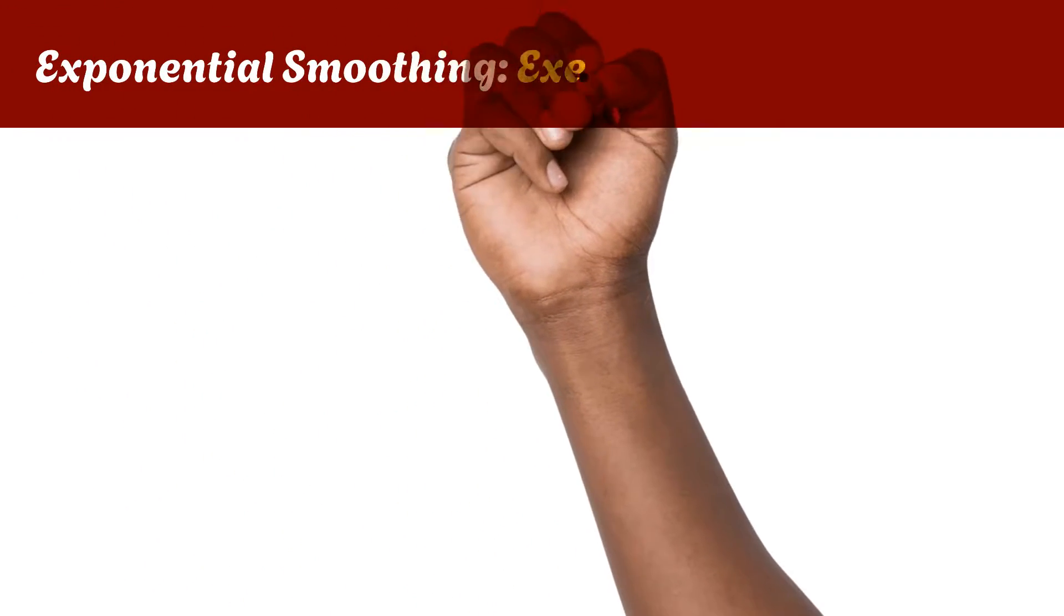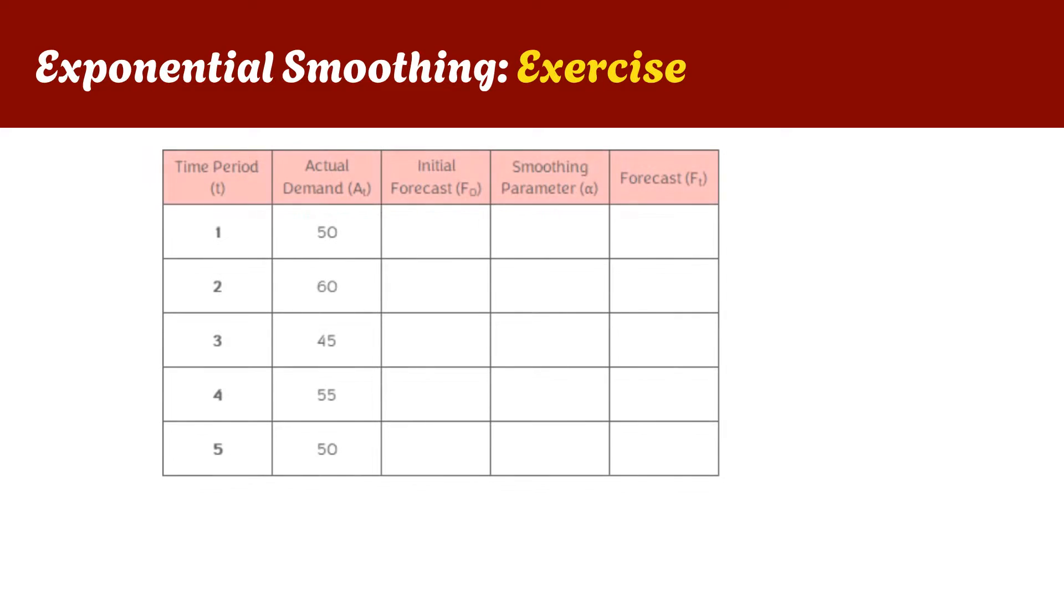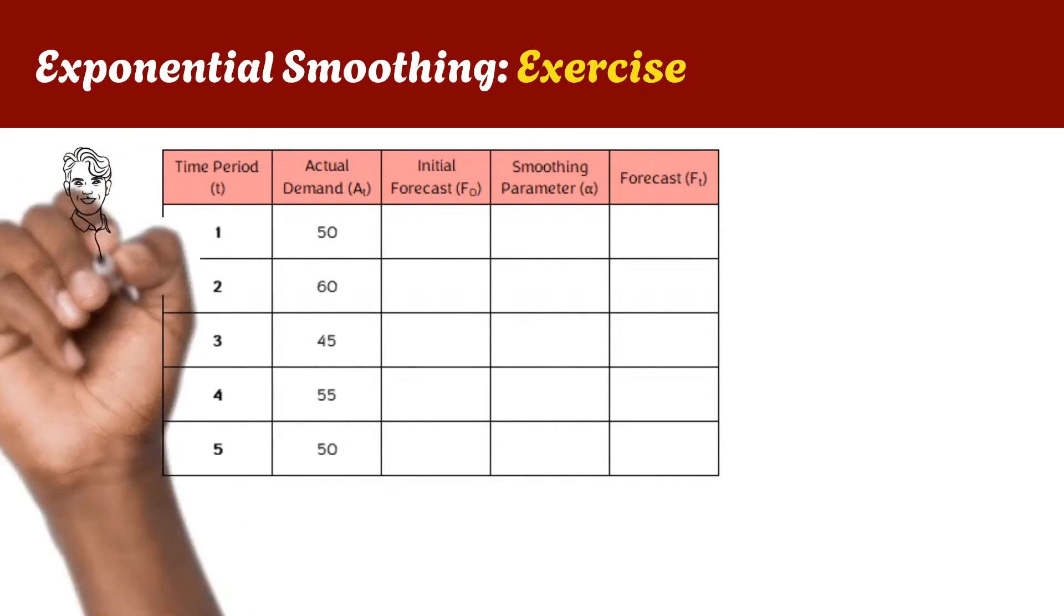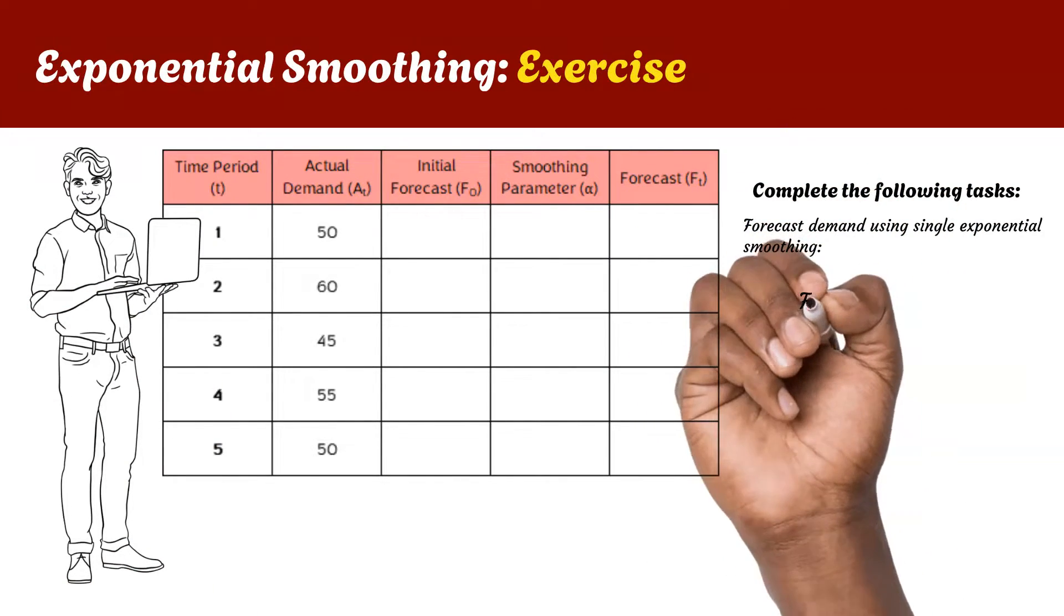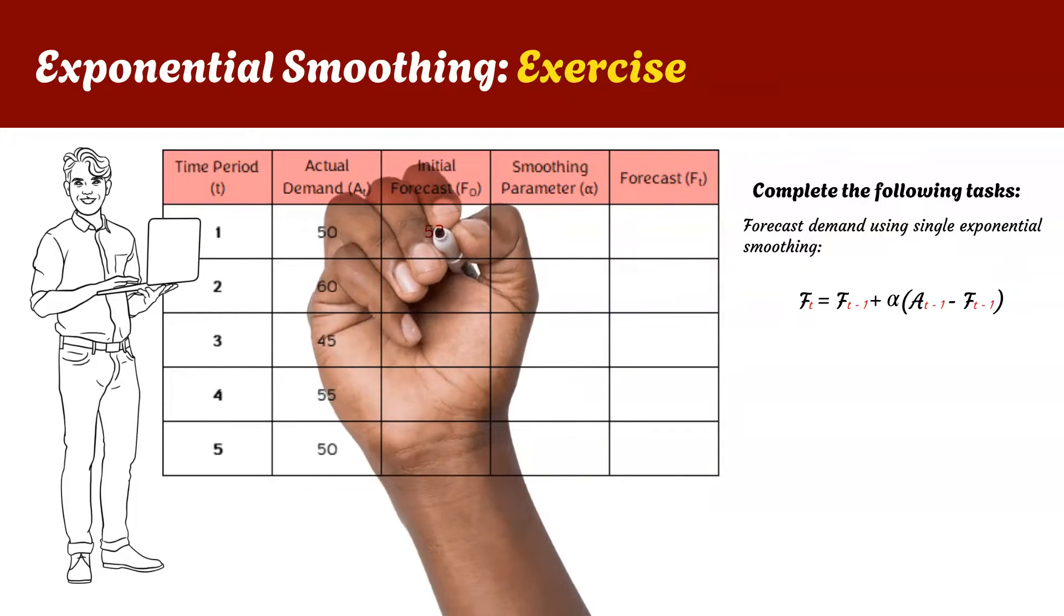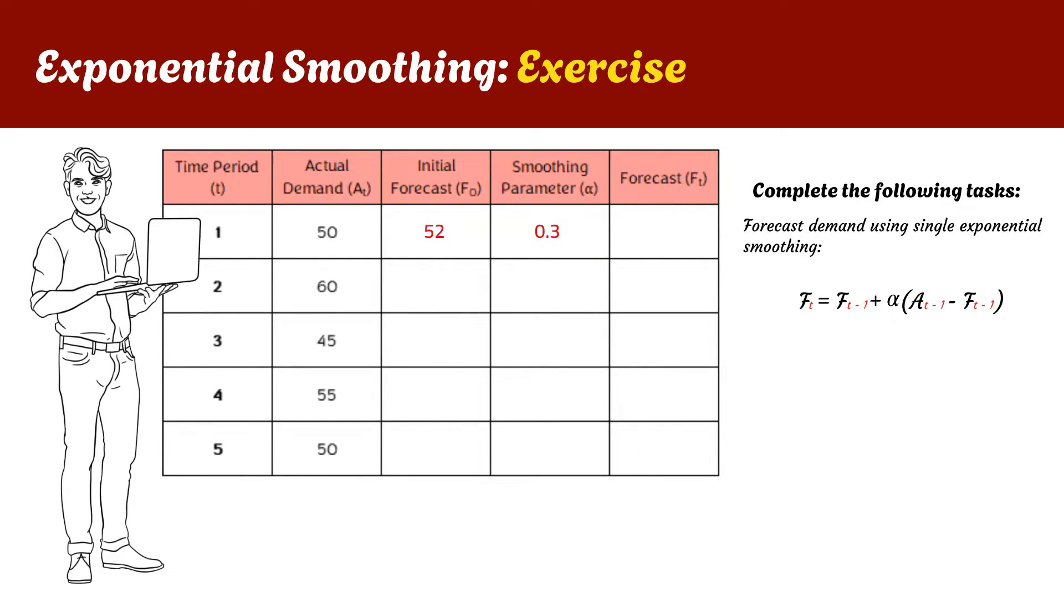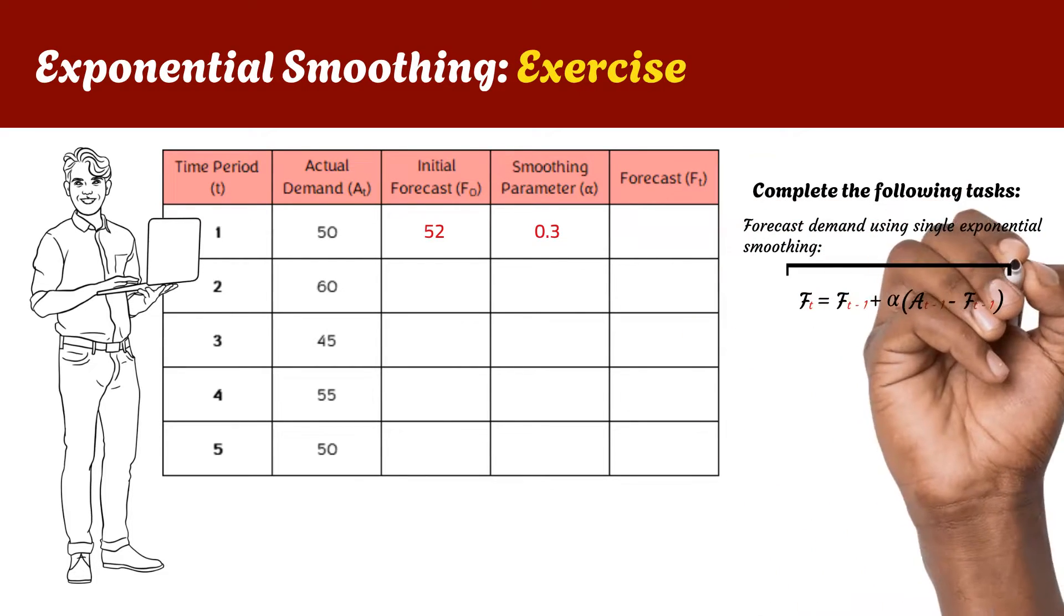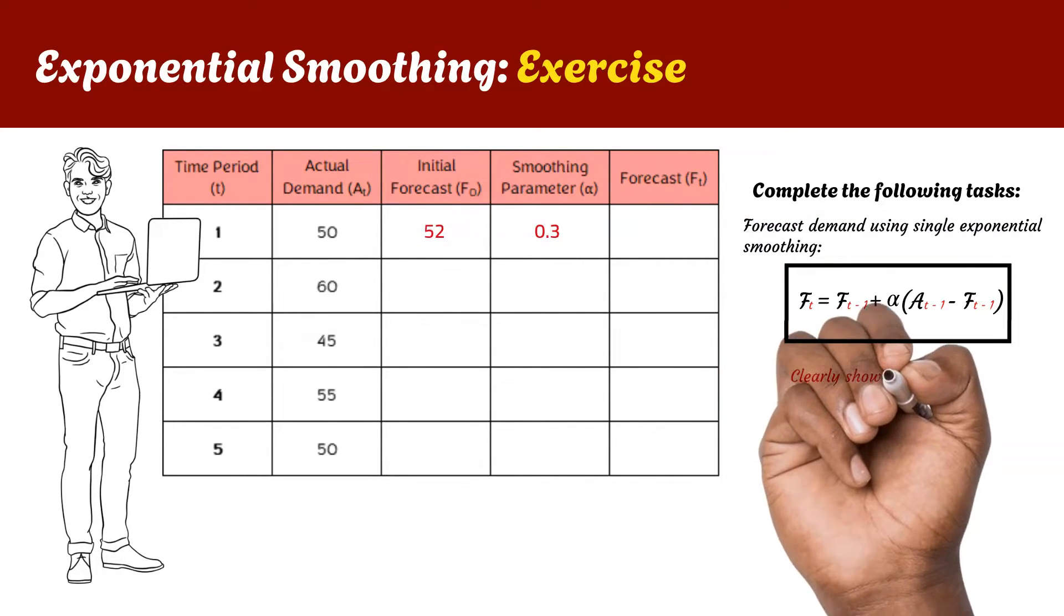As we have done in our previous videos, it is now your turn to have a go at using exponential smoothing in a forecasting exercise. Imagine you are a manager responsible for inventory planning. You have been tasked with forecasting the demand for a product based on the provided historical data, and you decide to use single exponential smoothing. You have an initial forecast F0 of 52 units, and the smoothing parameter alpha is set to 0.3. Now we want you to help us forecast demand for each time period using the single exponential smoothing formula shown here. Clearly show your workings and present the final forecast for each time period.